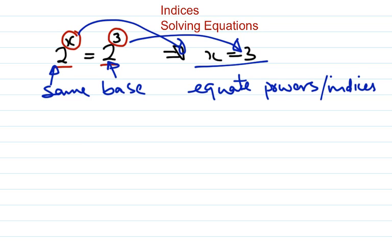Alright, in light of that, let's try a different problem. Okay, here we have a different situation, and we've got 2 to the power x plus 5 is equal to 32.